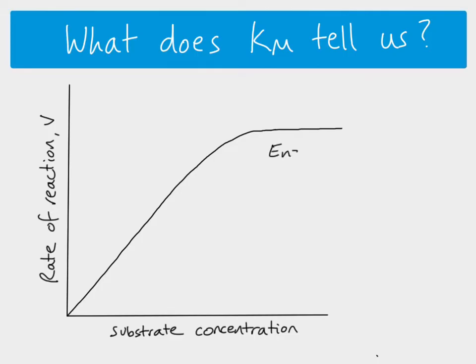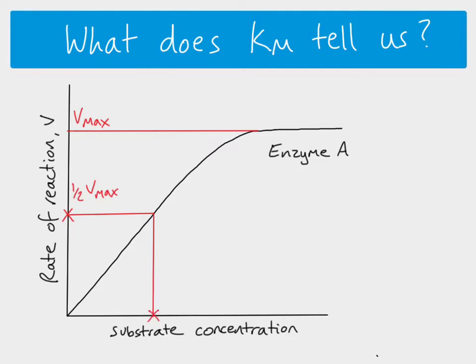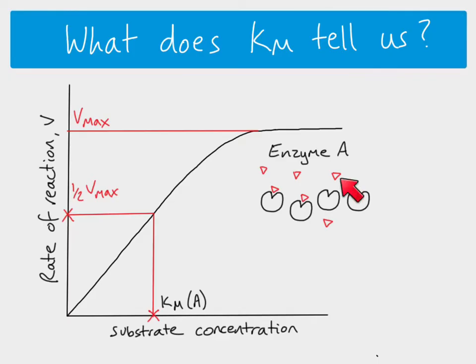So here is our first enzyme — we call this enzyme A. As we've just seen from this graph, we can calculate Vmax, half Vmax, which will then tell us the Km for this particular enzyme. For enzyme A at half Vmax, it's going at half its maximum rate, which means that at any one point, half of the enzyme active sites will be occupied. So at this particular substrate concentration — I've represented that by having six substrate molecules — half of our active sites are occupied at any one time, and therefore we've got half Vmax.